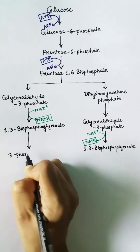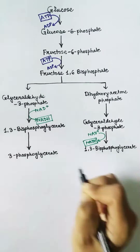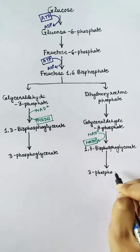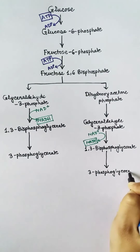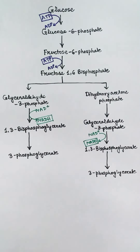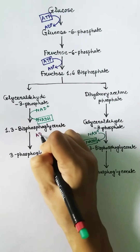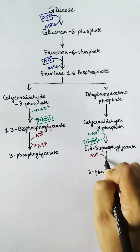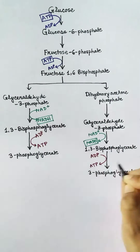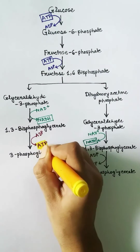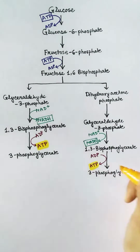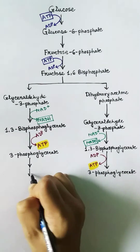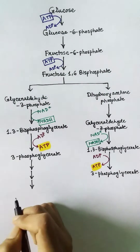A total of four ATPs are produced in the glycolysis pathway. One ATP is formed during the conversion of 1,3-bisphosphoglycerate into 3-phosphoglycerate, and since two molecules are present, two ATPs total are formed by this conversion.